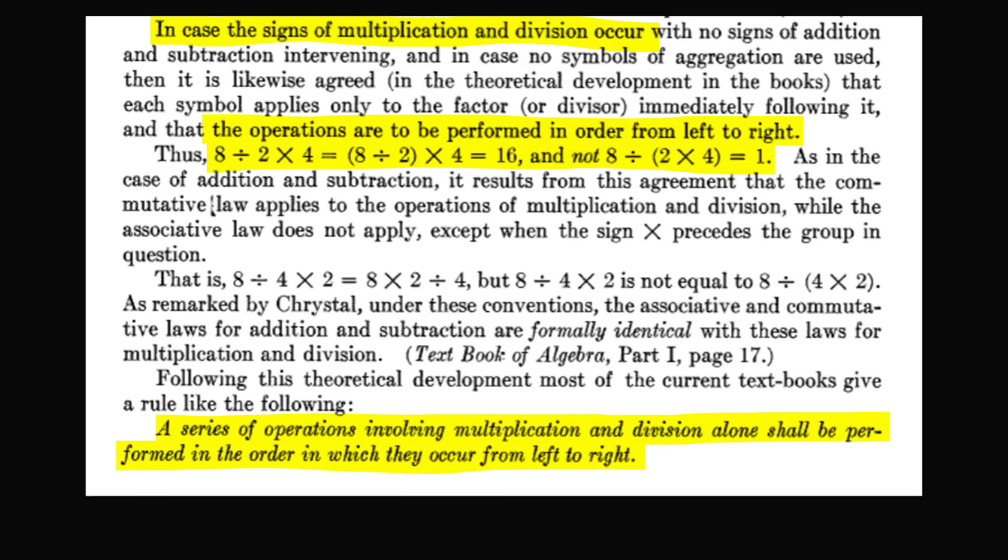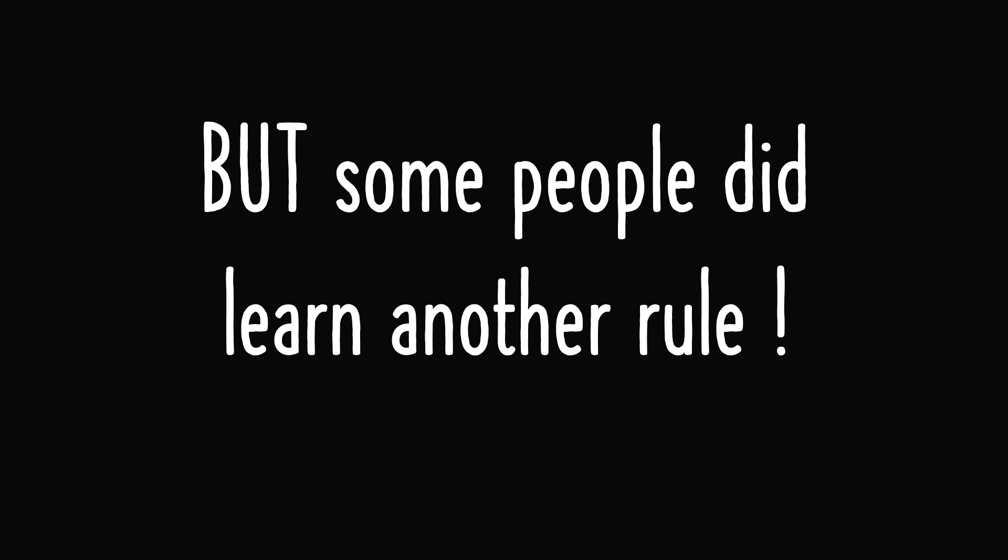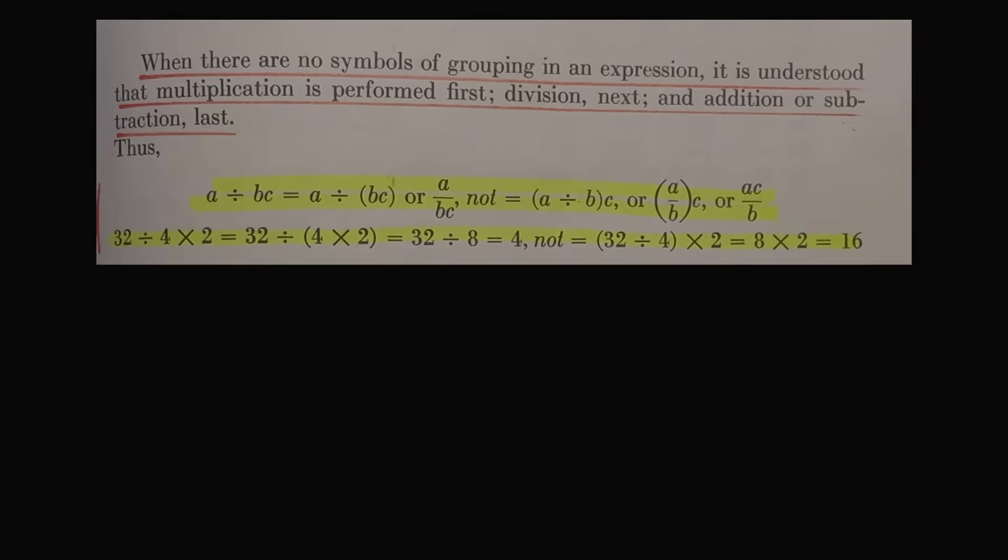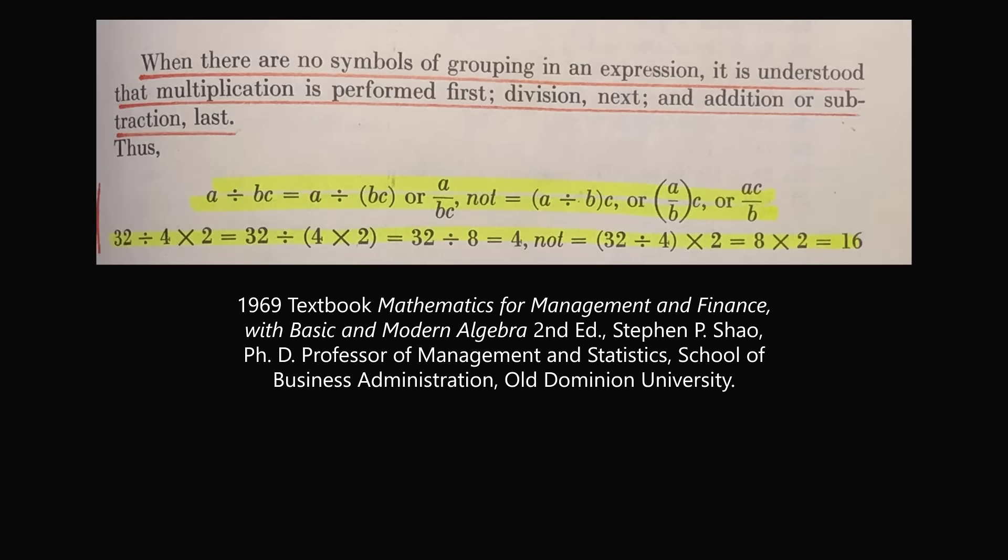So this should settle matters and everybody should just agree. But I'm so glad I made these videos because finally a reader did show me proof that some people did learn another rule. Here is a textbook from 1969. When there are no symbols of grouping in an expression, it is understood that multiplication is performed first, division next, and addition or subtraction last.